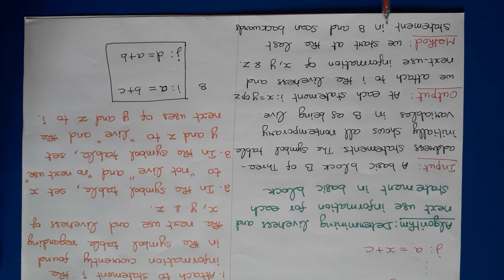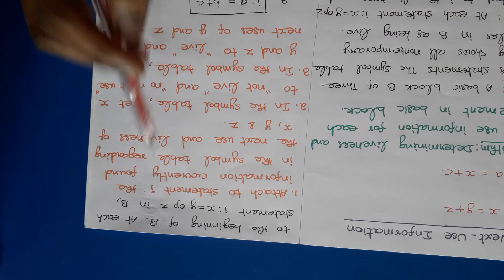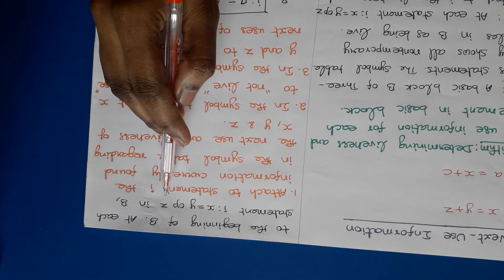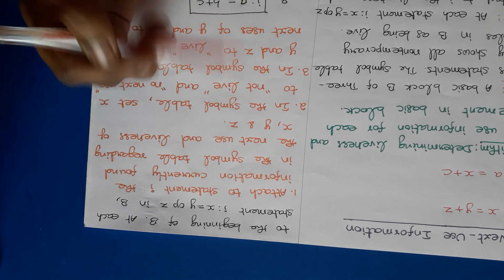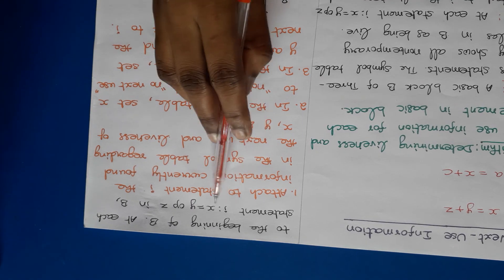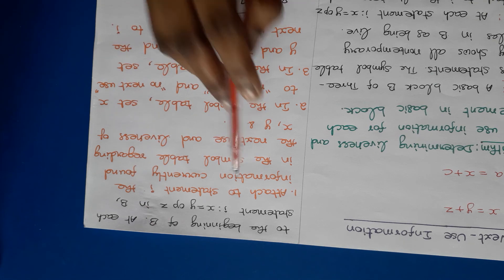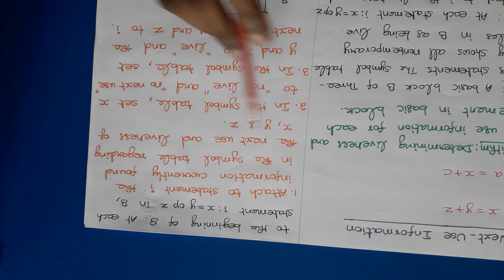The method: this algorithm is a backward scan algorithm, so we start at the last statement in the basic block b and scan backwards to the beginning of b. There are three steps to perform at each statement i: x = y op z in the basic block. The first step is to attach to statement i the information currently found in the symbol table regarding the next use and liveness of x, y, and z.